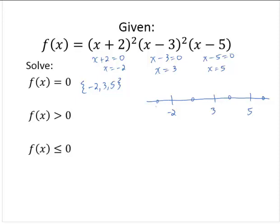Let's say I choose negative 4. Negative 4 plus 2 is a negative number, but that's being squared. Negative 4 minus 3 is also a negative number, and that's being squared. And negative 4 minus 5 is also negative. A negative squared is positive, a negative squared is positive, and we still have this negative — so positive times positive times negative is negative.